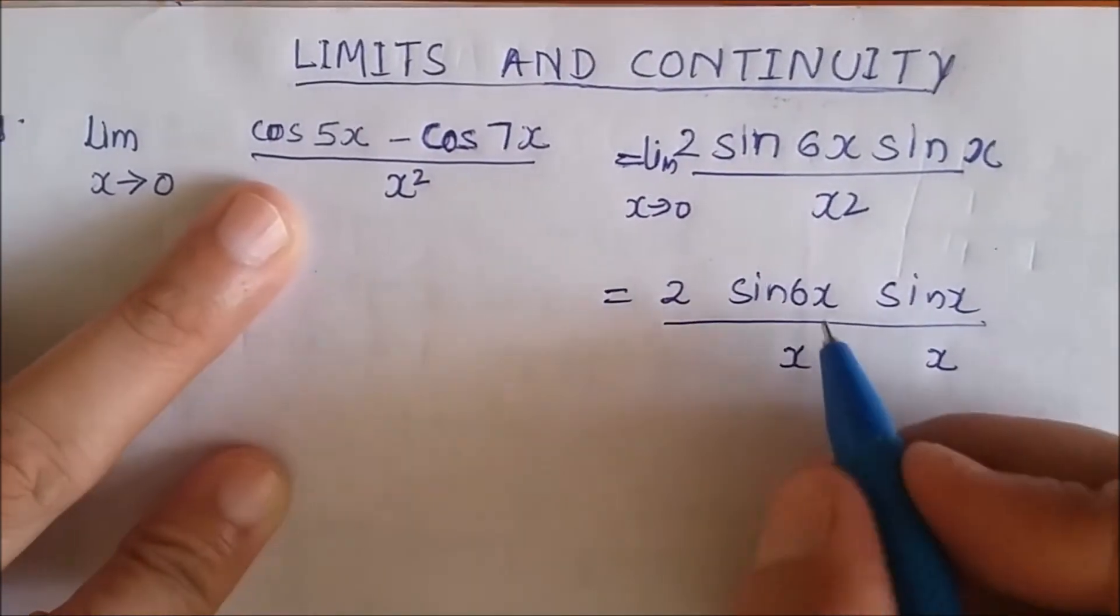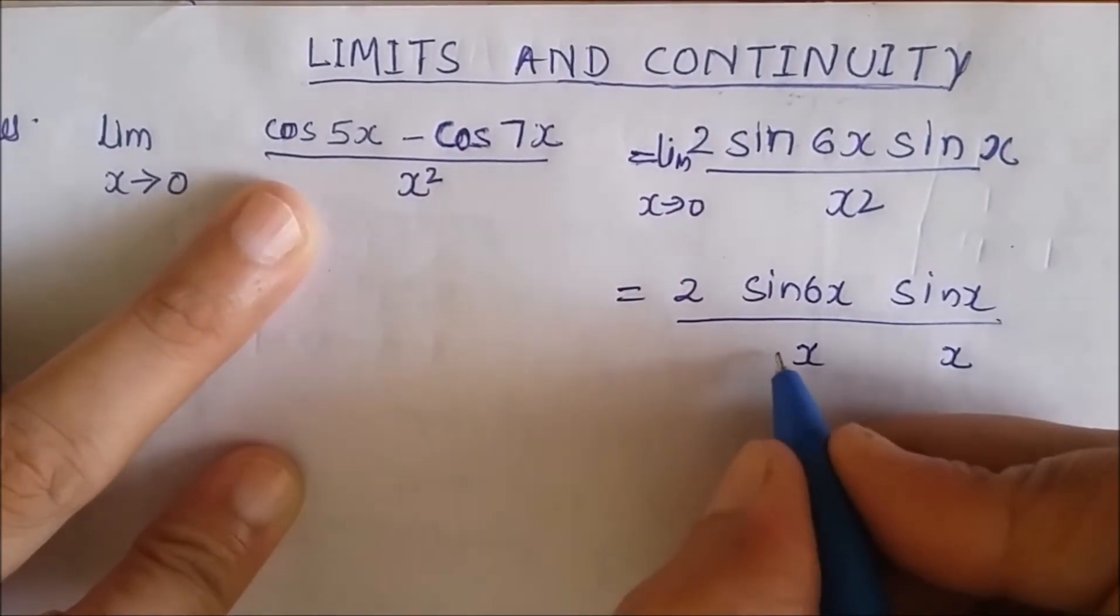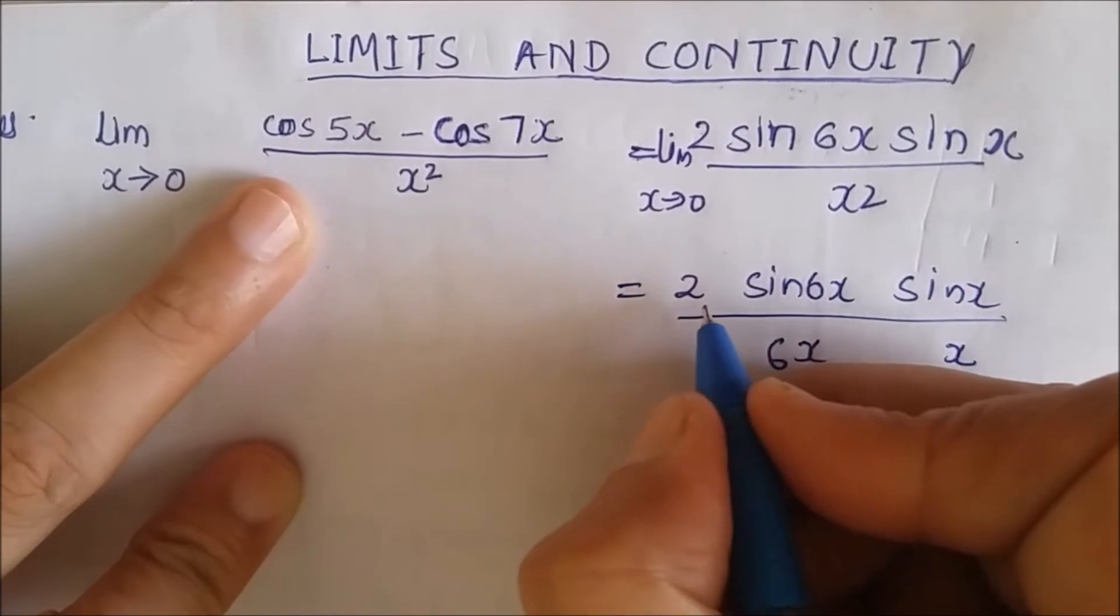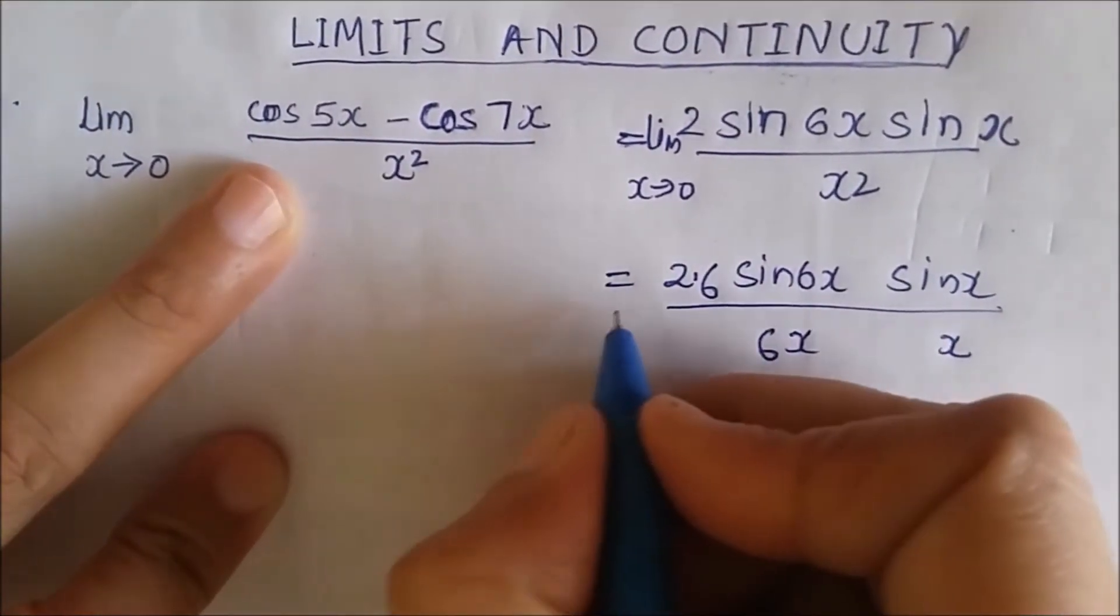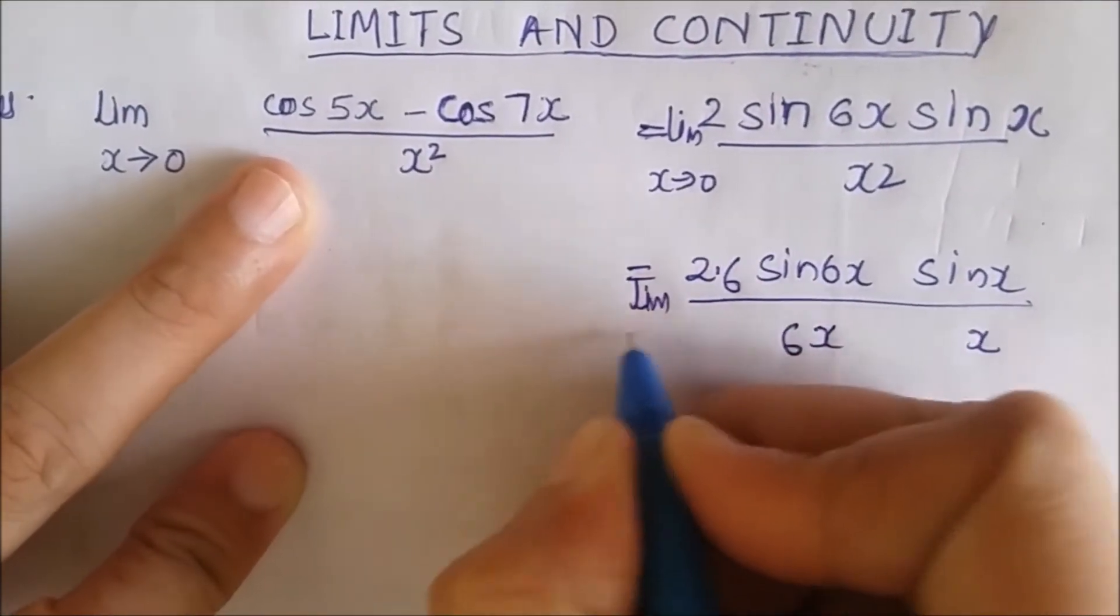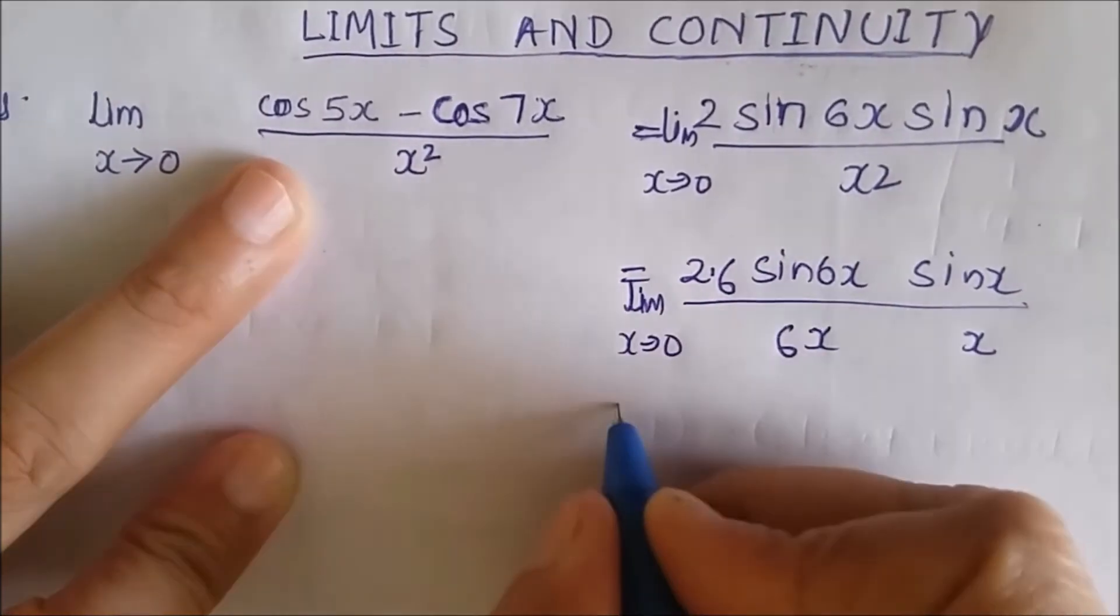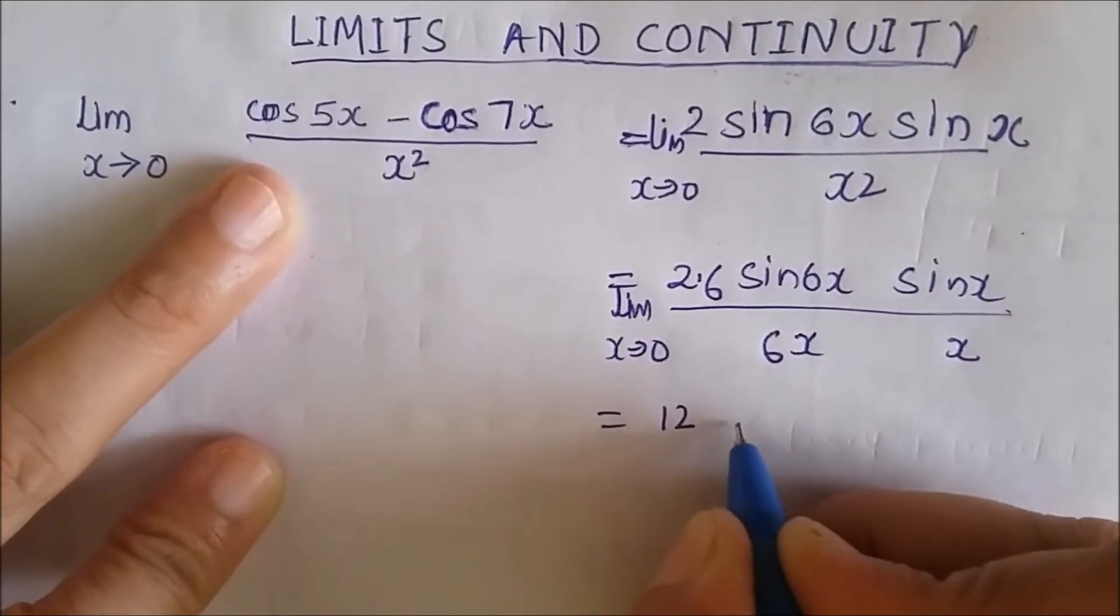Here 6x is there, so I need 6x here. I will multiply by 6 in the numerator also. Of course limit is there, limit x tends to 0. So this will reduce to 12 limit...